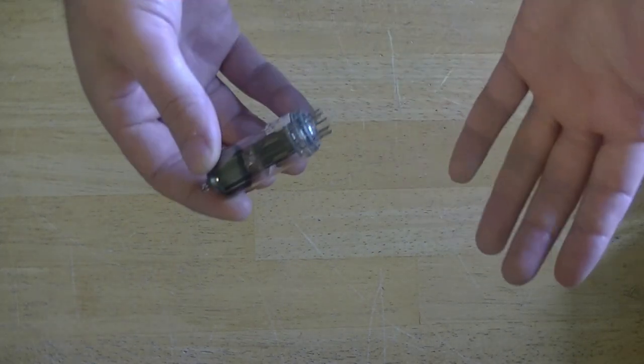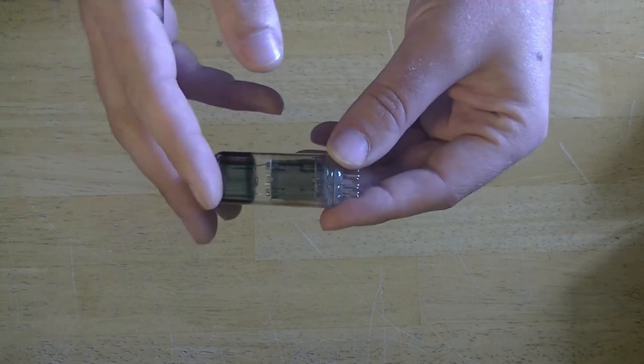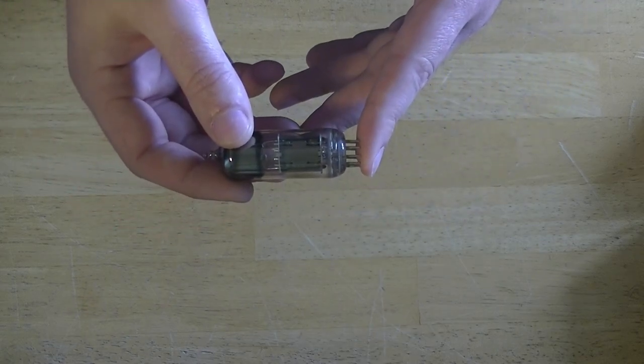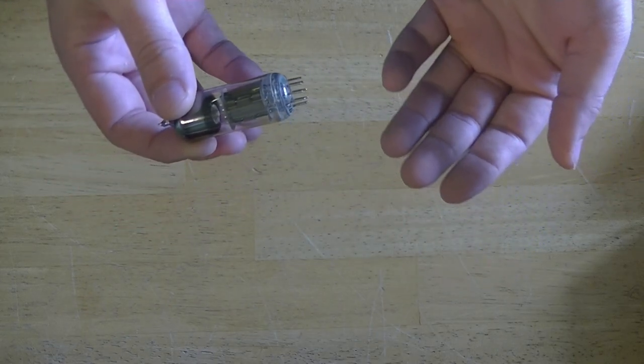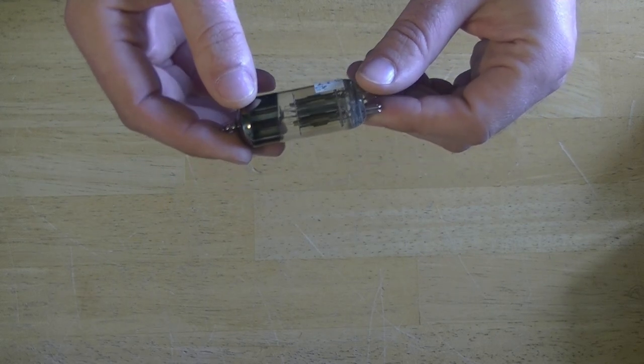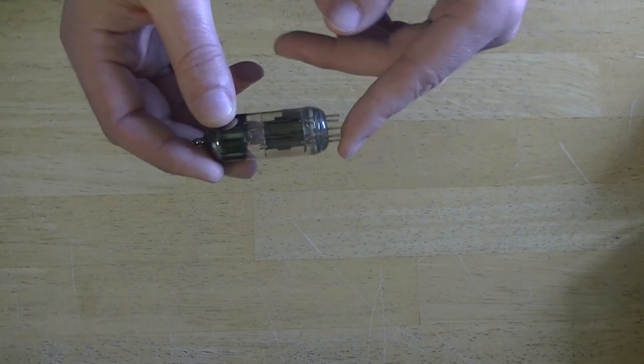Now, actually, let's bring the 6N6P back in here for a second to talk about this a little bit more. I've already passed all of these tubes through a GM tester just to weed out any of the bad ones. And we have several cases of them. And out of quite a few tubes, we've only had a couple tests bad. They're very nice.